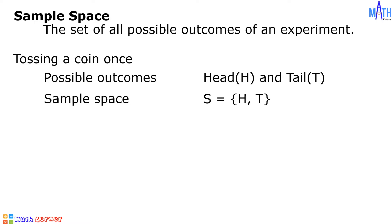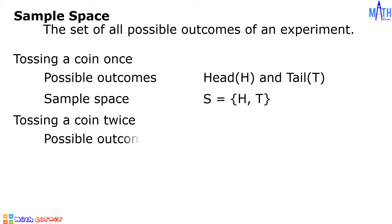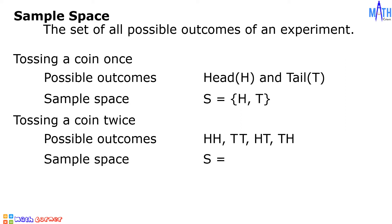In an experiment of tossing a coin twice, the possible outcomes are head-head, tail-tail, head-tail, and tail-head. The sample space S consists of the elements head-head, tail-tail, head-tail, and tail-head.